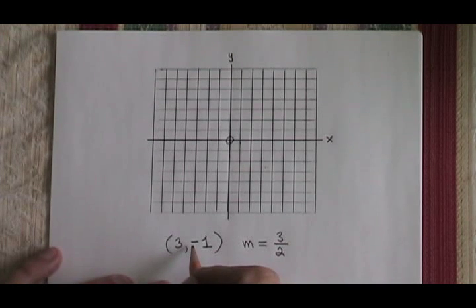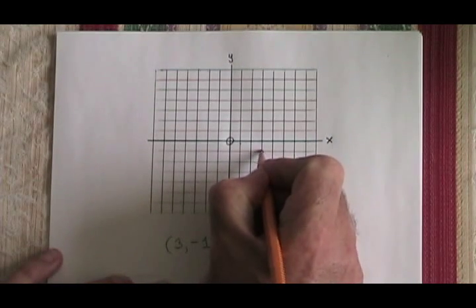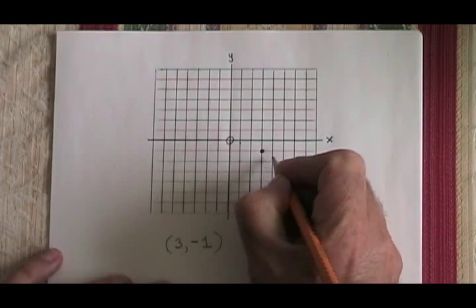First thing I'm going to do is graph my starting point. Here I have 3, negative 1. 3, negative 1 is right here. So I put a dot and I identify the point.